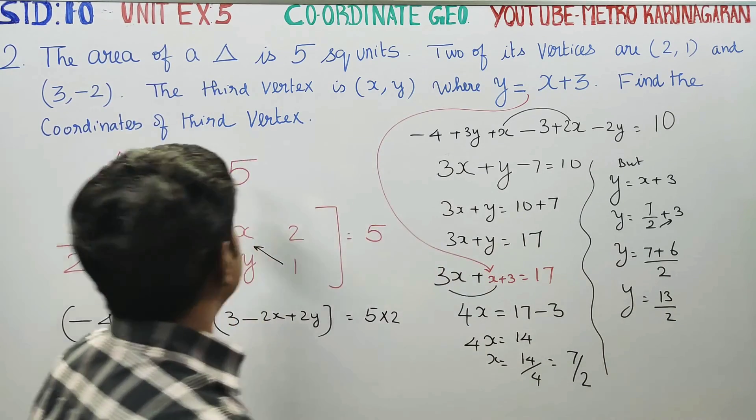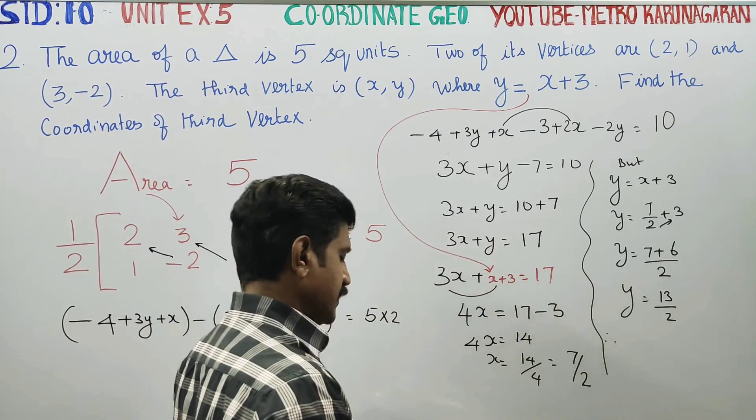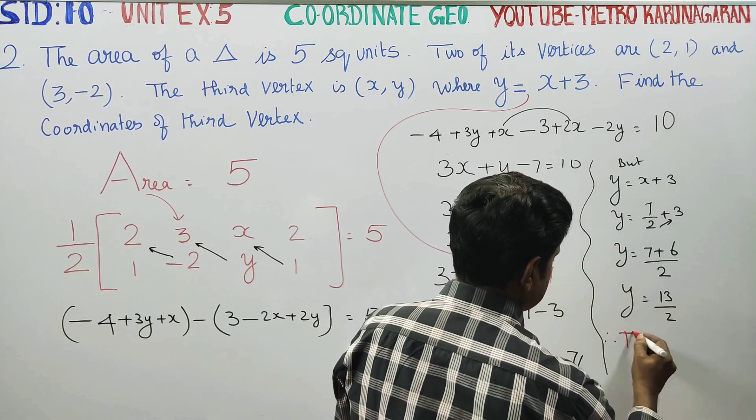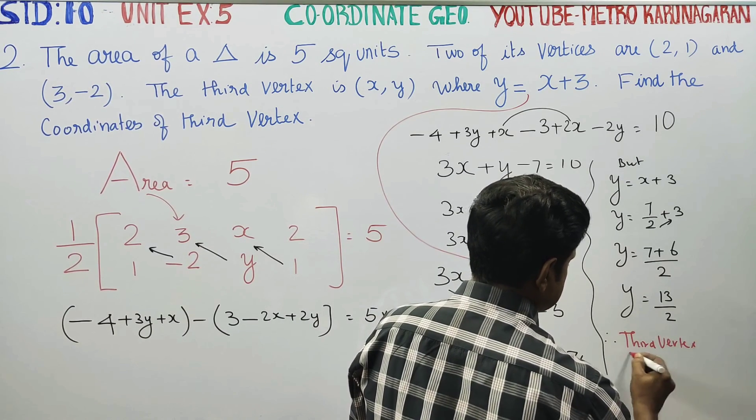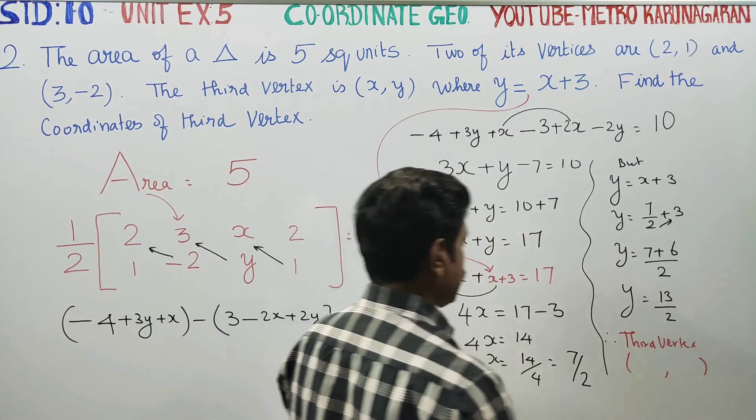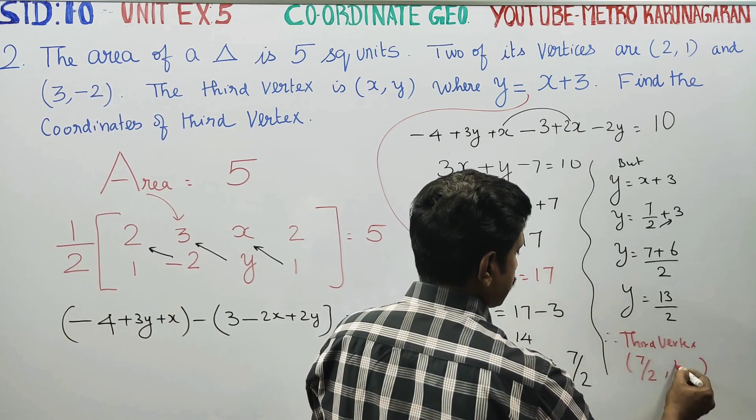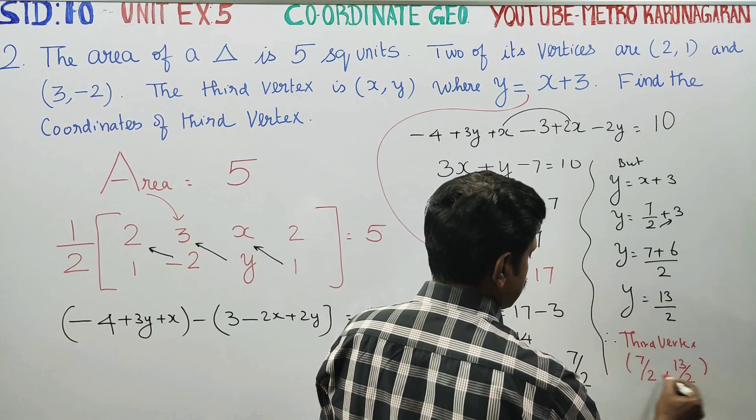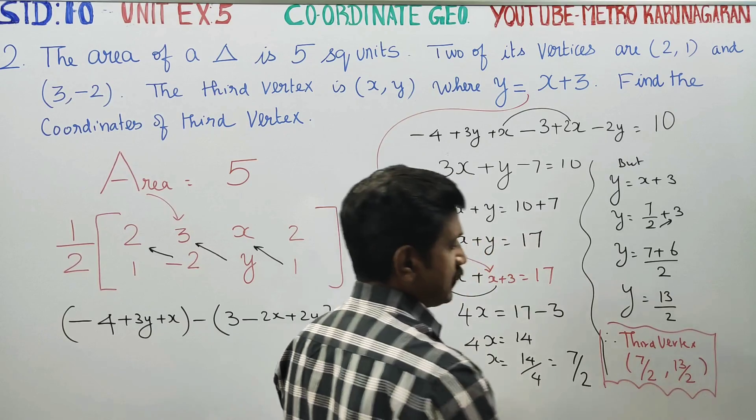Therefore, the final answer will be the third vertex. x coordinate is 7 by 2 and y coordinate is equal to 13 by 2. This is the third vertex, your final answer. Thank you.